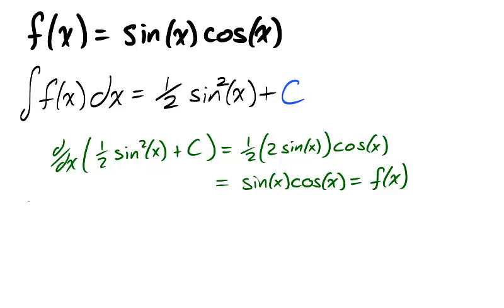Taking the derivative and using the chain rule, we find that the derivative of 1 half sine squared of x is f of x.